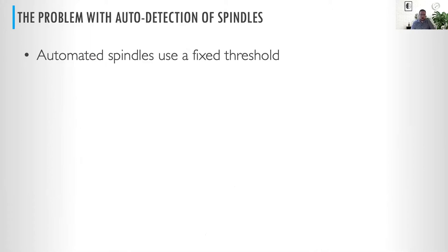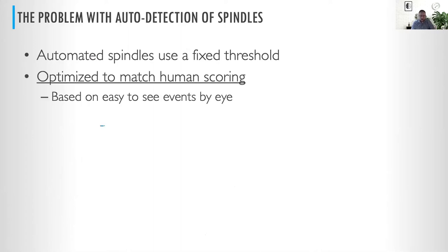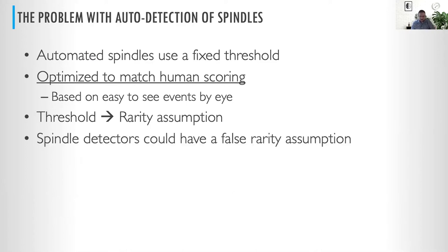What's the problem with using these auto detectors? They are certainly more objective, but automated detectors use a fixed threshold on either amplitude or some measure of spectral power, and these are optimized to match human scoring. So again, it is tuning an algorithm to replicate what things are most easily seen by eye. These thresholds essentially place a false rarity assumption on the number of spindles, and spindle detectors may be imposing this false rarity based on what was visually accessible.